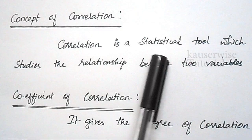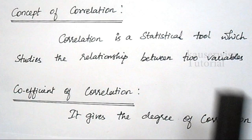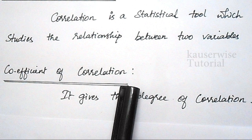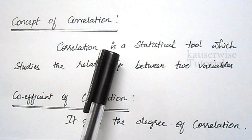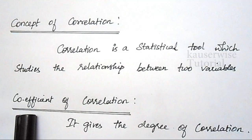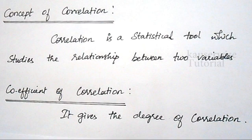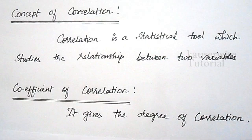Correlation means it is a statistical tool which studies the relationship between two variables, for example x and y. Coefficient of correlation means it gives the degree of correlation between the two variables — that is the amount of correlation. The degree of correlation can be identified with the help of the coefficient of correlation formula. This is the basic concept of correlation analysis.